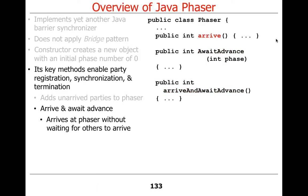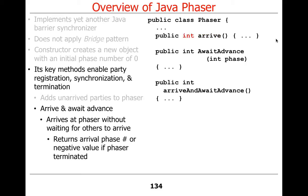When you arrive at the phaser without actually waiting, you get back the current phase number. If the phase was terminated, you get back a negative number — sorry, the ride is closed. So you arrive and get back something that says this is your arrival number, you're part of this cohort.